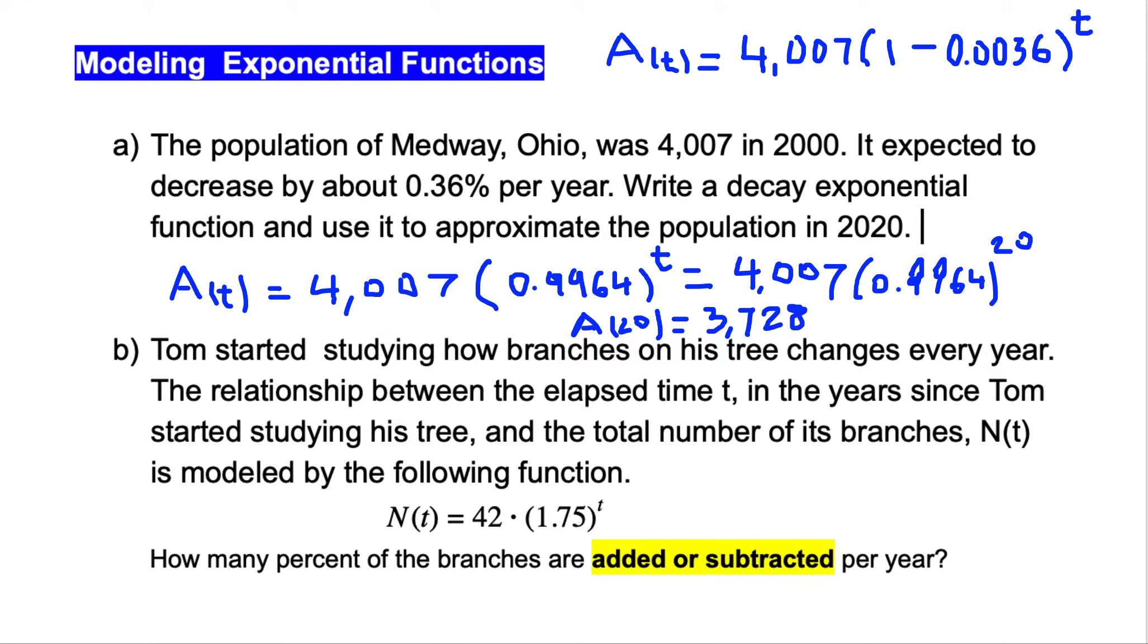We already saw b equals 1 plus r. Here we see b equals 1.75, so 1.75 equals 1 plus r. Subtracting both sides by 1, minus 1 here and minus 1 here. This implies r equals 0.75 because 1 minus 1 is 0, and on the other side we have 0.75.